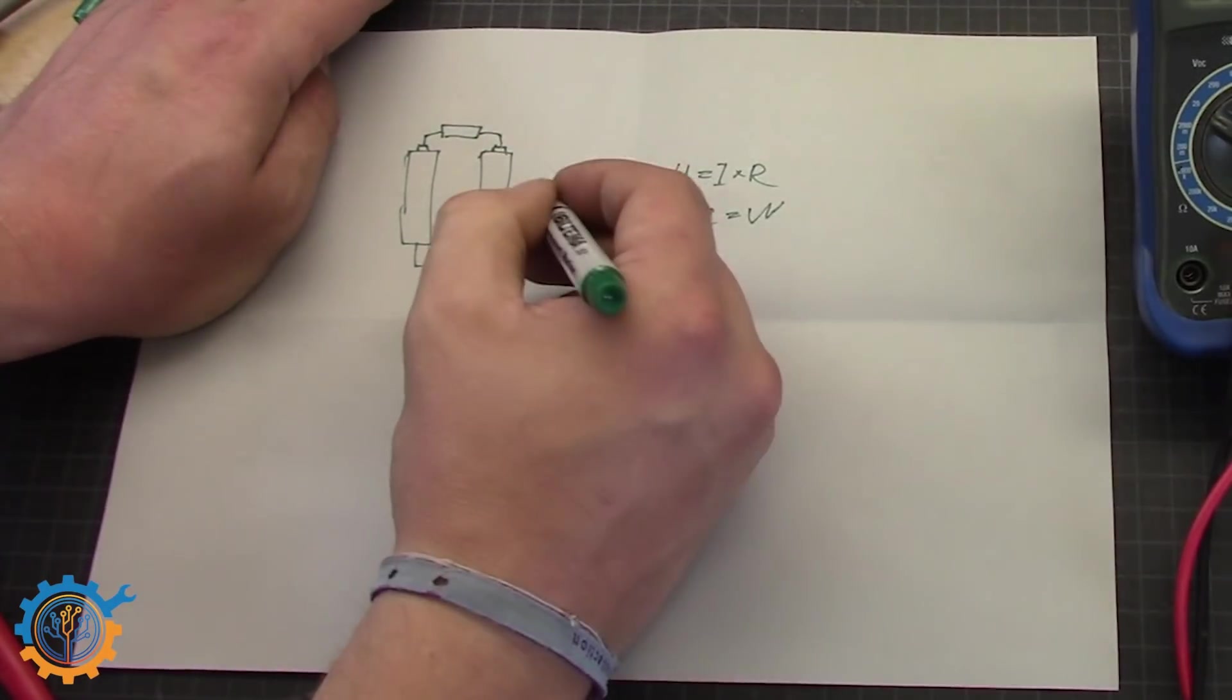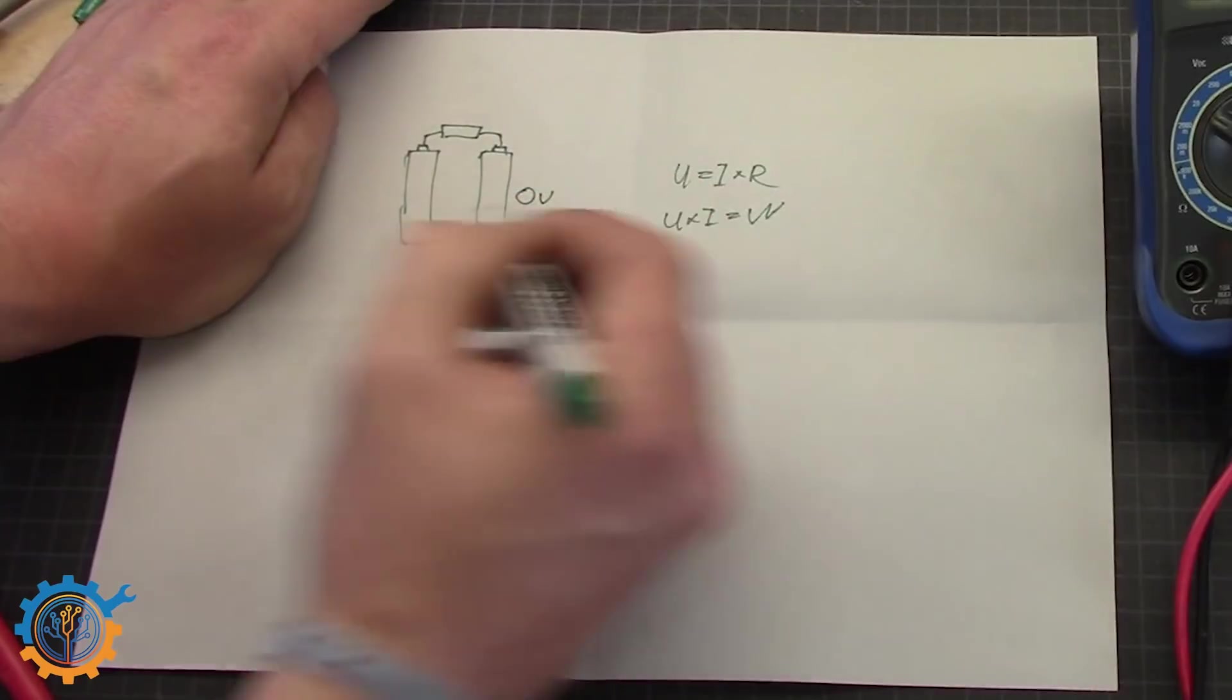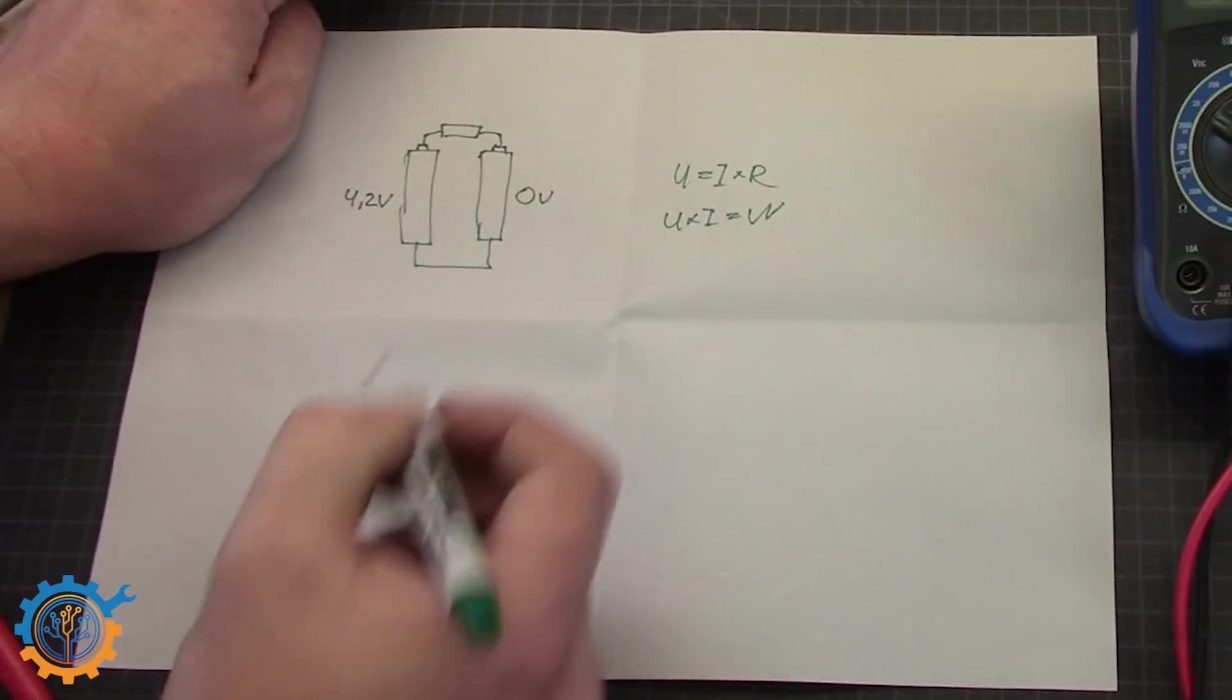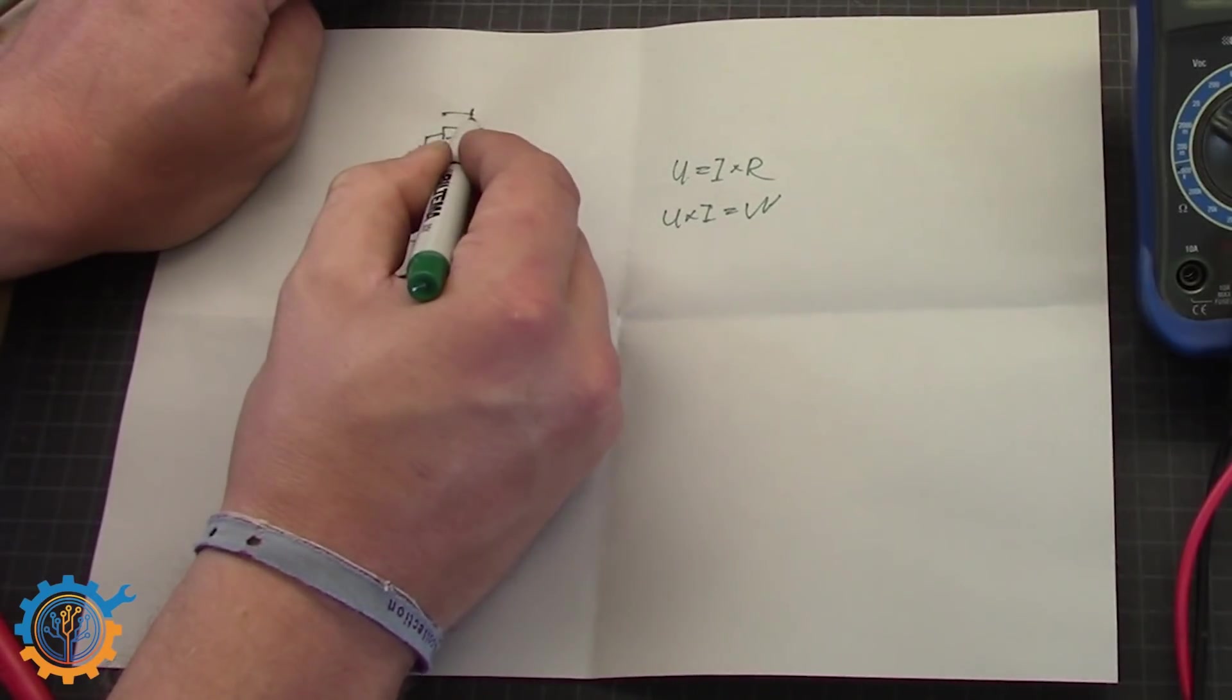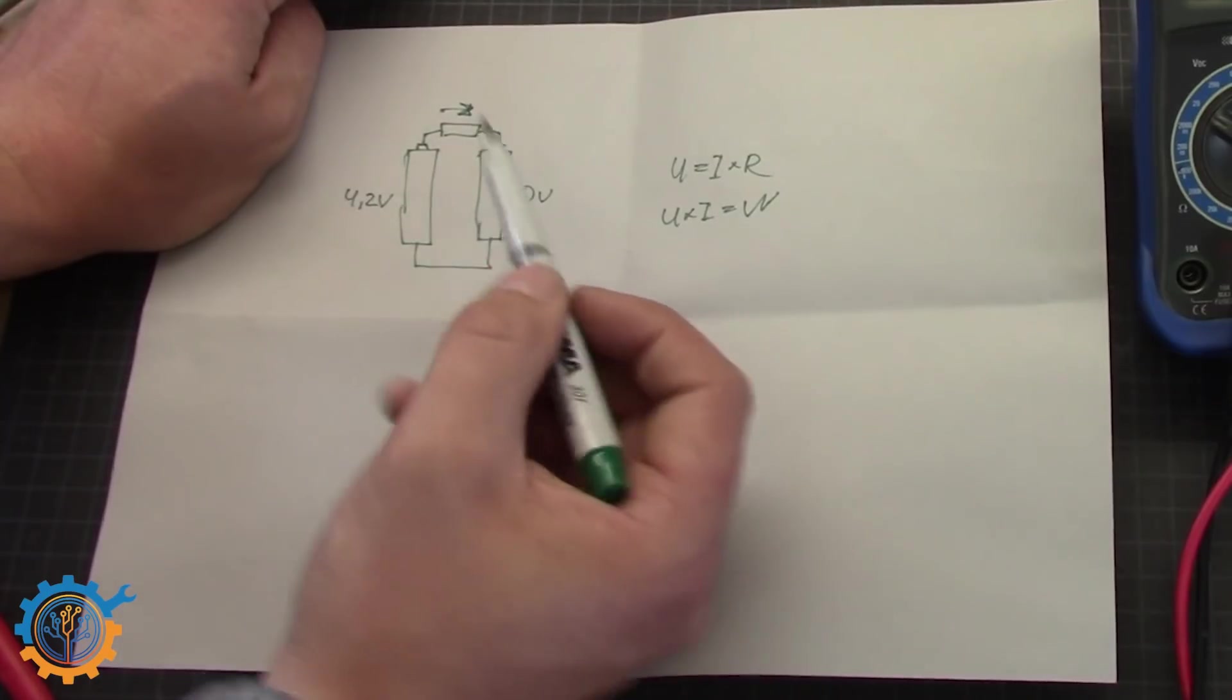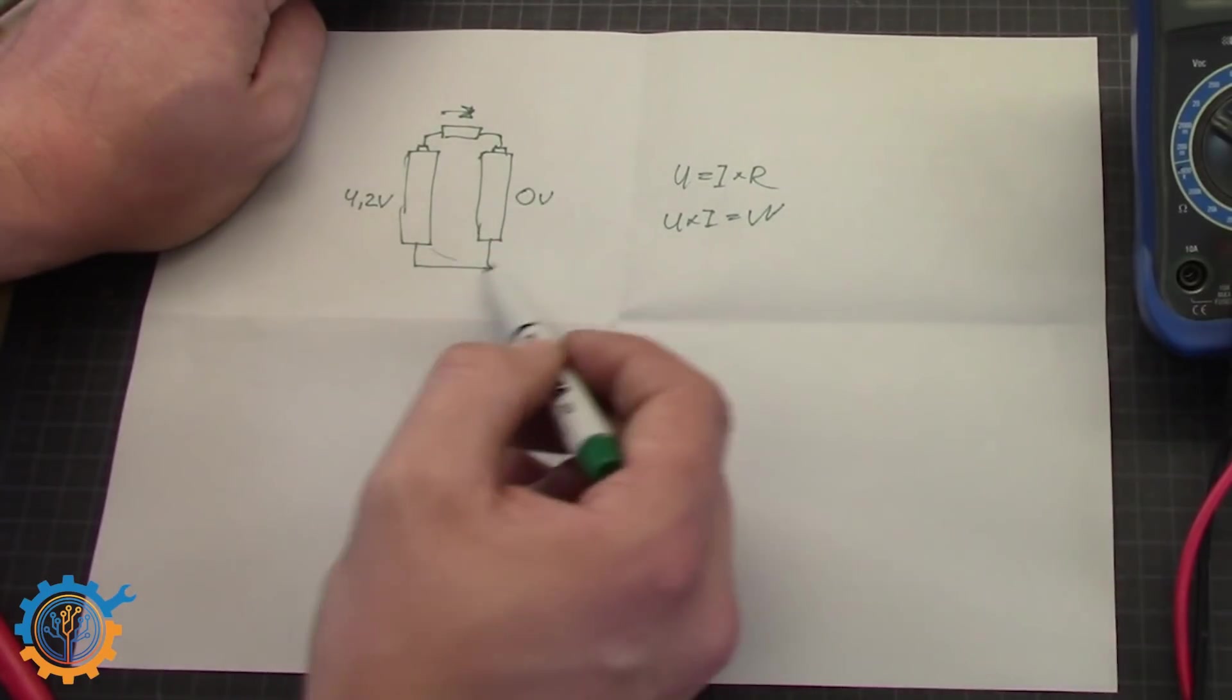In the worst case we will have 0V on that side. And 4.2V on that side. When the current is flowing here. We need to define the resistor that we are going to use. To limit the current in this circuit. And that is this formula.